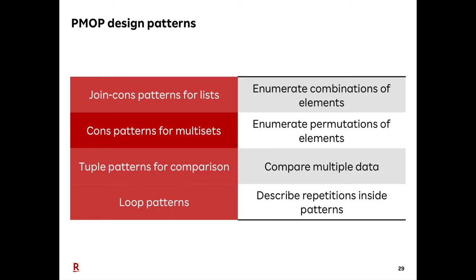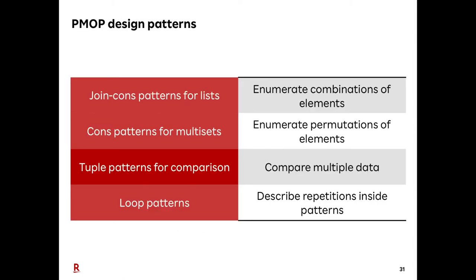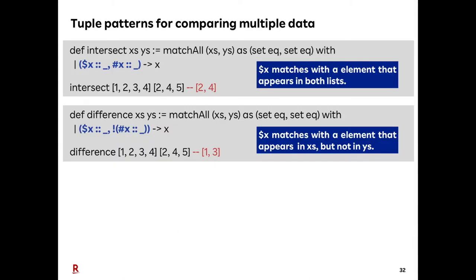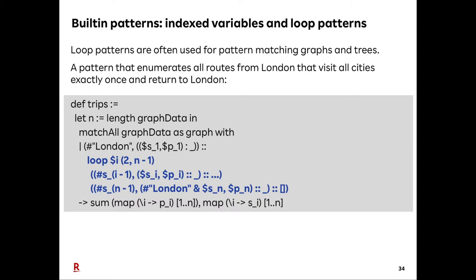The next design pattern is cons patterns for multi-sets. Join-cons patterns for lists emulate combinations of elements, whereas cons patterns for multi-sets emulate permutations of elements. Cons patterns for multi-sets are often used for describing mathematical algorithms, as we will see in part 4. The next design pattern is the tuple pattern for comparison — tuple patterns can be used for comparing multiple data, and we demonstrate them by defining intersect and difference functions. Finally, loop patterns combined with non-linear patterns are very powerful. For example, this pattern match expression can solve the travelling salesman problem, enumerating all routes from London that visit all cities exactly once and return to London.